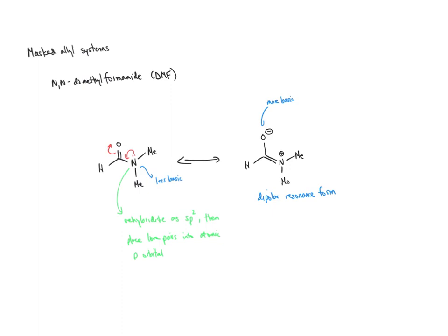What this also tells us is that the two methyl groups are now in different environments — one methyl group is on the same side as the oxygen atom, while the other is on the opposite side. Because you can't rotate around the carbon-nitrogen bond — it has partial double bond character — those two methyl groups will have different signals in the NMR. So the allyl system is the simplest of the conjugated systems; you have to look out for whether the system is symmetrical, but all allyl systems share the same kind of shape and size for the molecular orbital description.